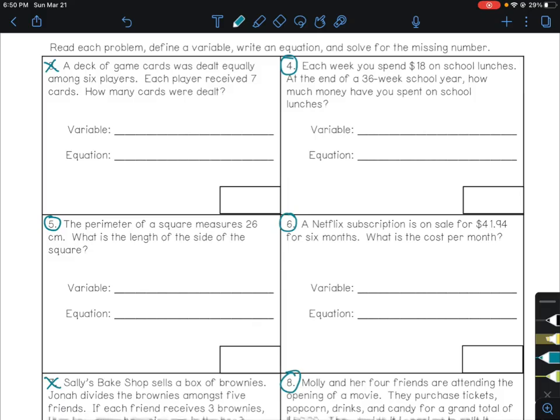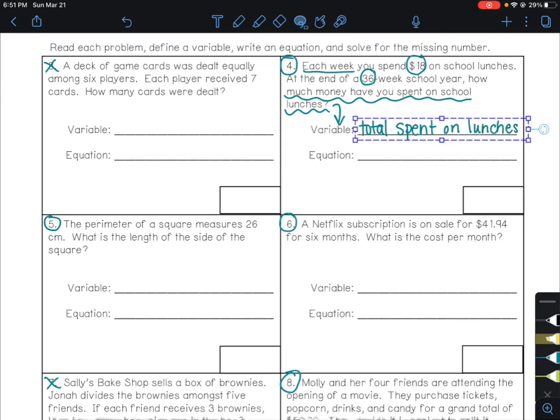We'll look at some examples together, and then the remaining examples I will just show the work for at the end of the video. So number four, each week you spend $18 on school lunches. At the end of a 36-week school year, how much money have you spent on school lunches? First thing, I see $18 is each week, and it's going to happen for 36 weeks. The question is asking, how much money have you spent on lunches? So our variable is going to be that question.